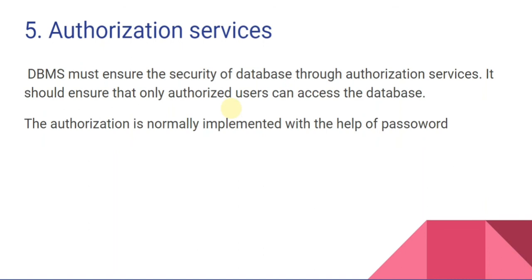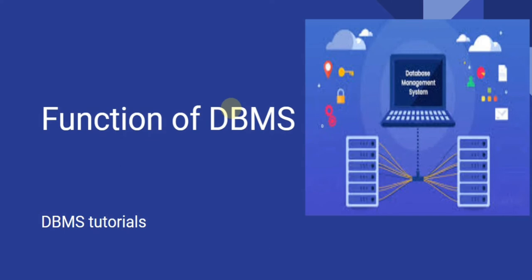The fifth function is authorization services. DBMS must ensure the security of the database through authorization services — it should ensure that only authorized users can access the database. Authorization is normally implemented with the help of passwords. In this age hackers and malicious users can access your data without authorization, so DBMS provides security support for the data stored in the database. These are the different functionalities of DBMS that help manage how data is stored and managed.